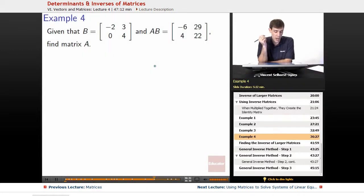And AB equals negative 6, 29, 4, 22. Find the matrix A. So how are we going to do this? We don't know what A is. We know what AB is. We know what B is.